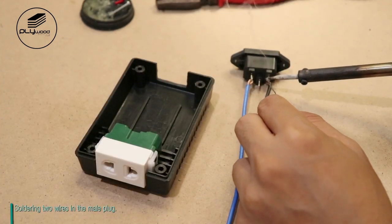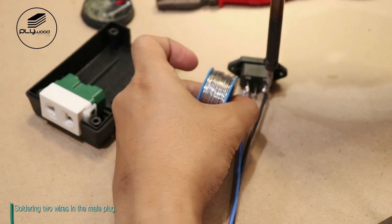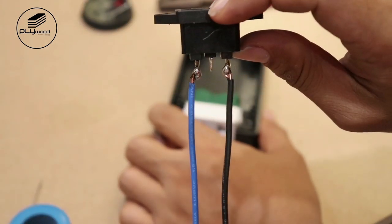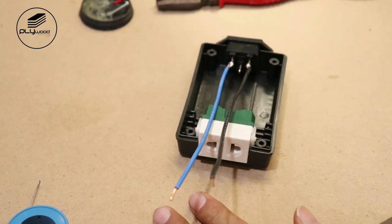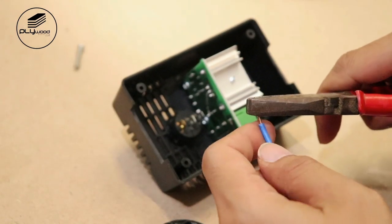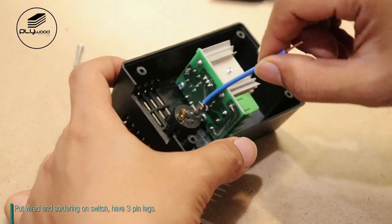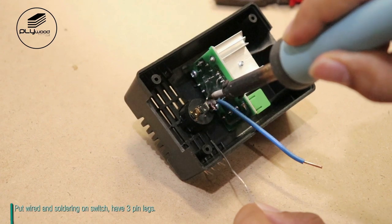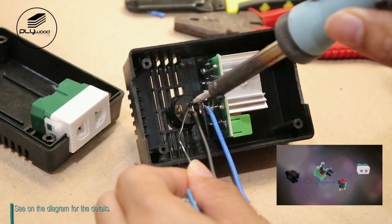Solder two wires in the male plug. Put the wires and solder on the switch which has three pin legs. See the diagram for the details.